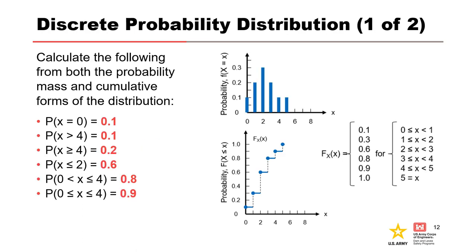Here is an example of a discrete probability distribution shown in two forms. The top plot is a probability mass function, giving the probability that a discrete random variable is exactly equal to some value. The bottom plot is the cumulative form. The probability that x equals zero is 0.1; the probability that x is greater than 4 is also 0.1. The probability that x is greater than or equal to 4 is 0.1 plus 0.1, which equals 0.2. From the cumulative plot, the probability of x being less than or equal to 2 is 0.6.